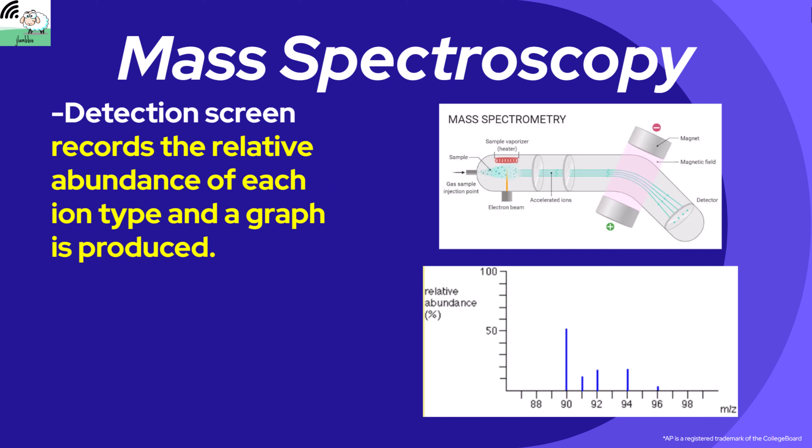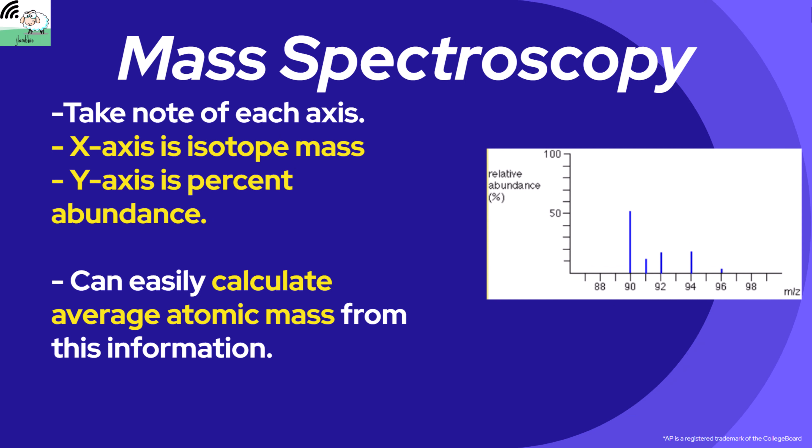The detection screen records the relative abundance of each ion type and a graph is produced from this. We can utilize this information to figure out the most abundant isotope and do a little bit of math to figure out the average atomic mass. As you look at the mass spec graph, notice that the x-axis is the isotope mass — sometimes referred to as mass-to-charge, shown as M/Z — but you can think of this as the mass of the individual isotope. The y-axis shows relative abundance. Our most abundant isotope has a mass of 90 and our least abundant has a mass of 96.